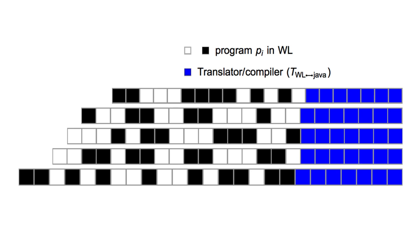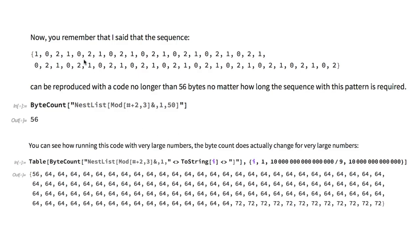Now, you may remember that I said that the sequence 1 0 2 1 0 2 and so on that we saw before can be reproduced with a code no longer than 56 bytes no matter how long the sequence with this pattern is produced. Well that is not entirely accurate.